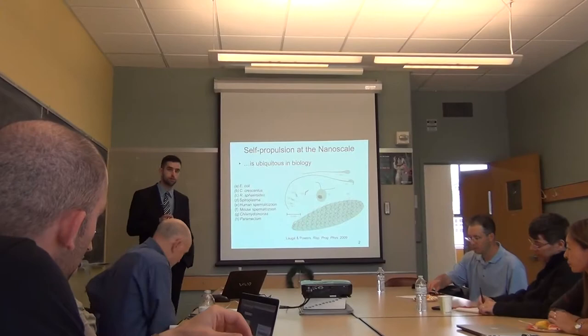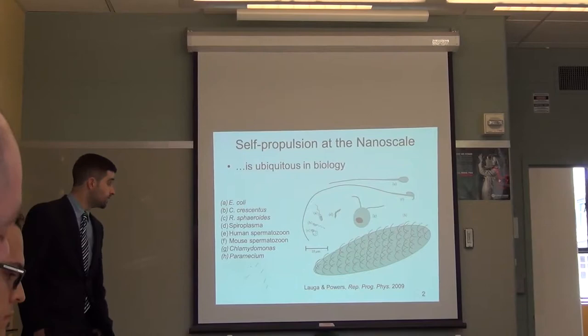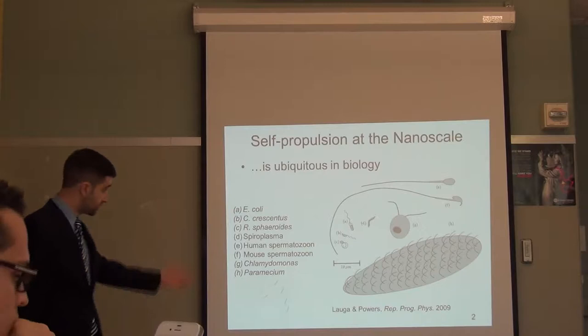Welcome everyone to my exam. My thesis research has been concerned with understanding electrokinetic locomotion at low Reynolds numbers. Swimming at the micro scale is both abundant and important in nature for a lot of natural processes including muscle contraction, the fusion of a sperm cell with an egg during fertilization, the bacteria that swim in our guts, and the algae in the ocean. This cartoon shows a variety of swimming microorganisms and it's to scale. That scale bar is 10 microns.